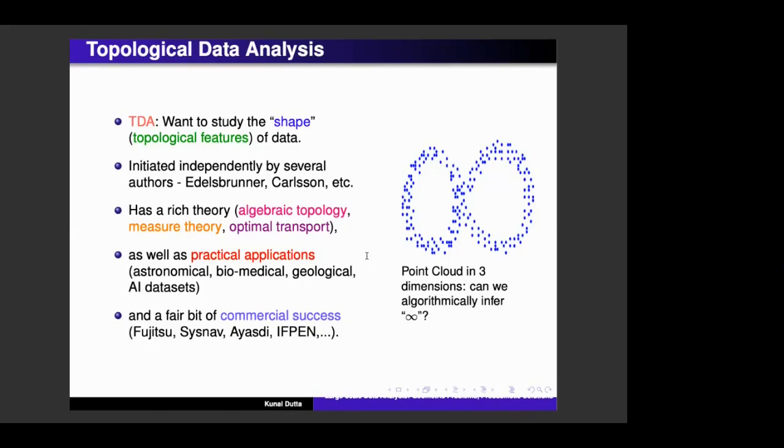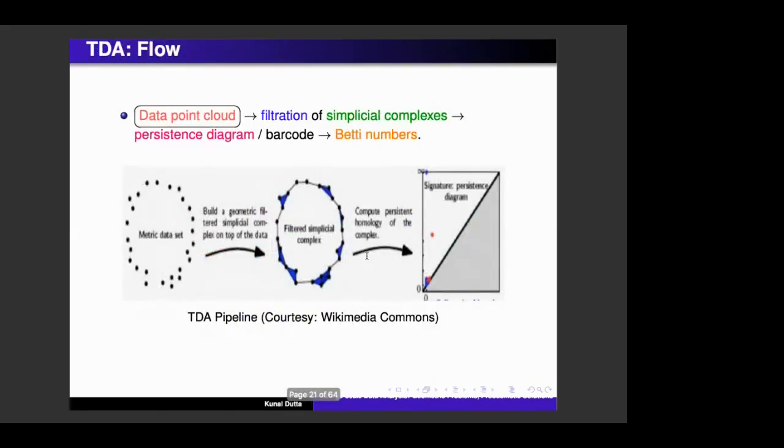Okay. So this process has seen several theoretical as well as commercial applications. Okay, so here's a brief primer on the flow of TDA. So you have the point cloud. And from the point cloud, you build a filtration of simplicial complexes, which means a nested sequence of simplicial complexes. And from these nested sequence, you can generate what is known as a persistence diagram or barcode. And from this, you can extract topological information, such as the Betti numbers.